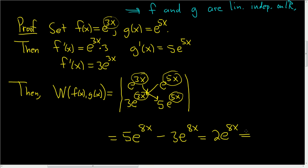And this is not equal to zero for all x in R. Therefore, the set containing e to the 3x and e to the 5x is linearly independent. That's it.